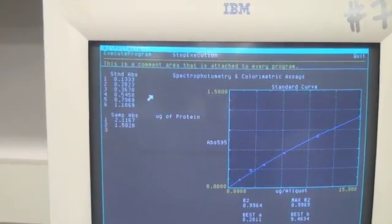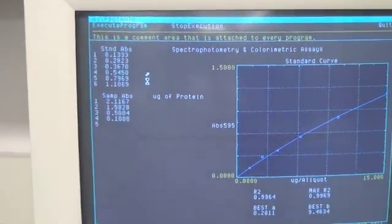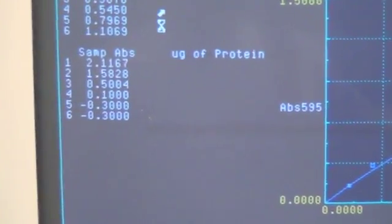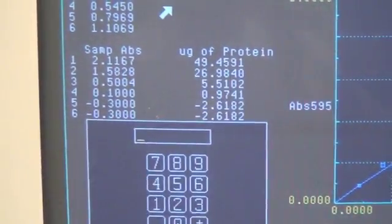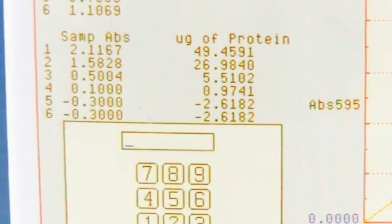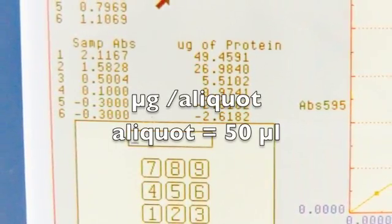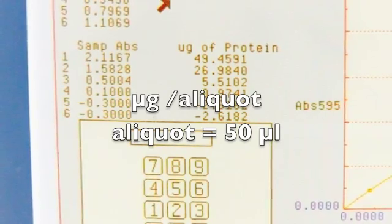The spectrophotometer program will also provide absorbances and determine the corresponding concentrations based on the curve fit tool's results. The concentrations are listed in micrograms of protein to the right of the absorbances, and they are the micrograms per aliquot for each sample added to dye.